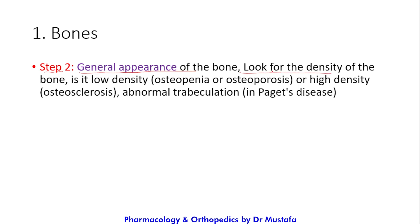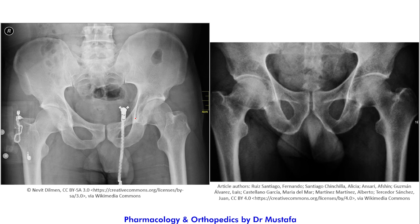Step two is the general appearance of the bone. Look at the density: low density indicates osteopenia or osteoporosis, high density indicates osteosclerosis, and abnormal trabeculation may suggest Paget's disease. Here is an example of an osteoporotic pelvis compared with a normal pelvis — the density of the bones of the pelvis and hips is decreased. Remember that the precise investigation for osteoporosis is the DEXA scan.